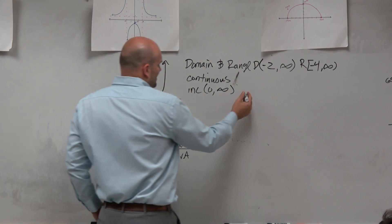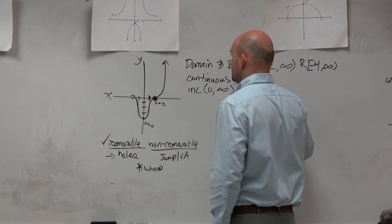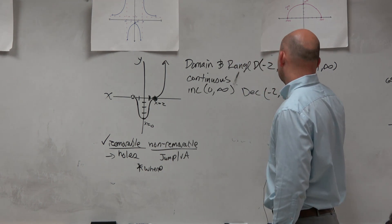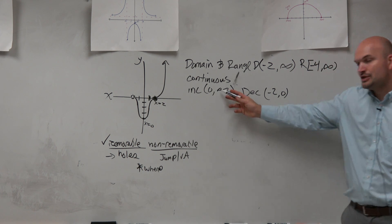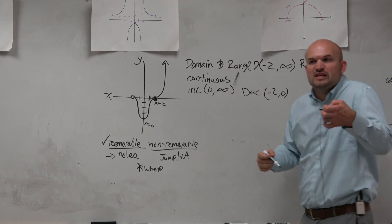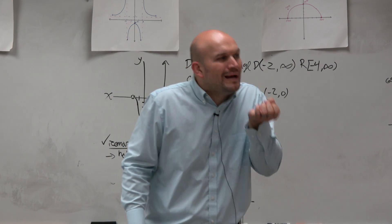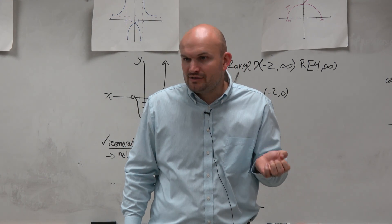And then I can say the graph is decreasing from negative 2 to 0. Again guys, these are the x values. These are the whens. When I'm asking you increasing, decreasing, constant, I'm asking you when is it increasing, decreasing, or constant?